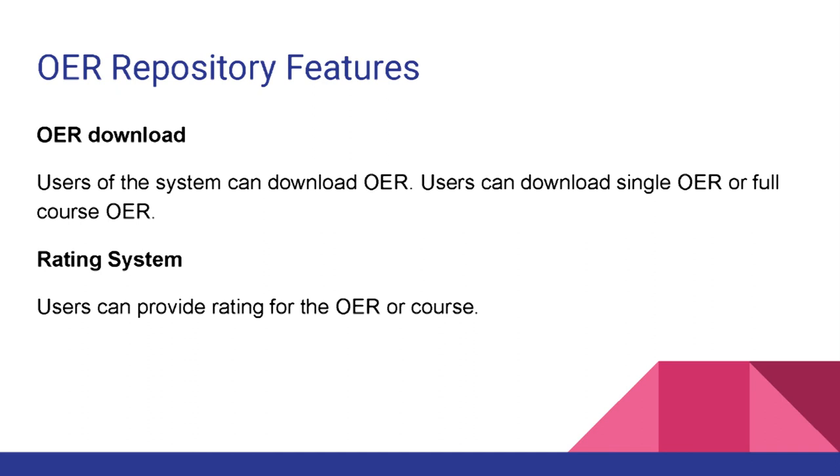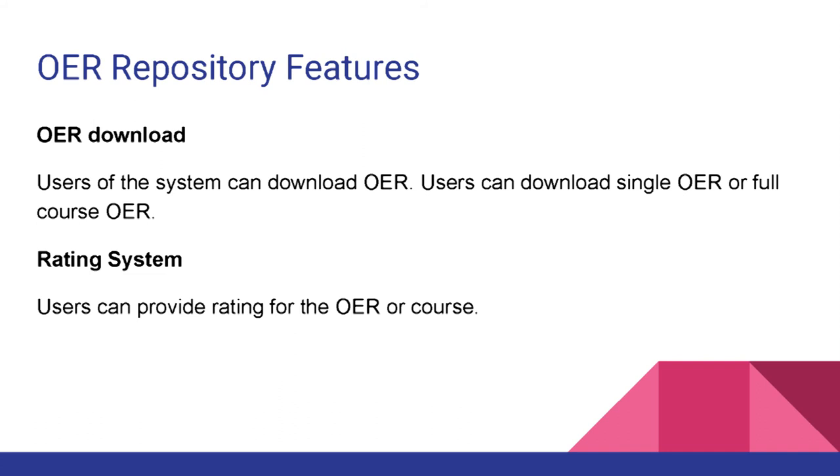Display OER: our OERs will be of video, PDF, image, etc. type, and we will have a mechanism to display these OERs in the browser. OER download will facilitate users to download the OERs. At the same time, we will keep a log of users who have downloaded files. A rating system will build a mechanism where the user will be able to provide a rating on some scale — say 1 to 5 or 1 to 10 — for every OER, course, or subject.